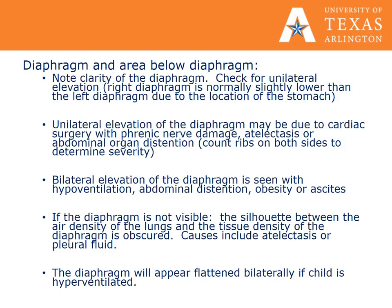Bilateral elevation of the diaphragm is seen with hypoventilation, abdominal distension, obesity, or ascites. If the diaphragm is not visible, the silhouette between the air density of the lungs and the tissue density of the diaphragm is obscured. The causes could be atelectasis or pleural fluid. The diaphragm will appear flattened bilaterally if a child is hyperventilating.